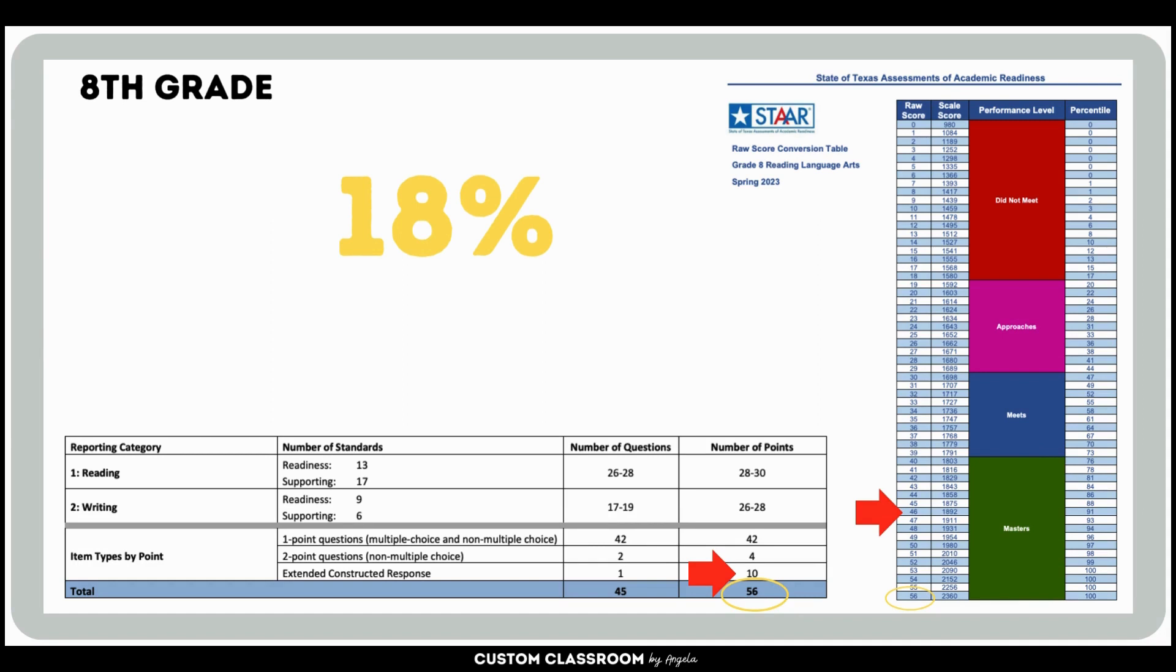I know the scoring is much more complicated than just this simple way, but to generalize it, about 18% of the 6th, 7th, and 8th grade test relies on the ECR question. And then high school, since it's 64 points, goes down to 16% of the overall score.